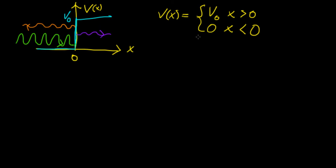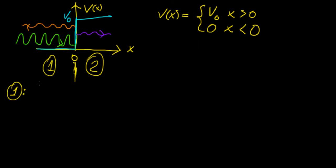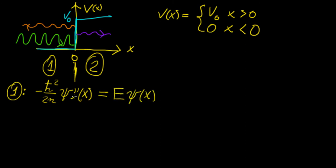To formulate any quantum mechanics problem, we start by writing the Schrödinger equation. We're going to have two regions: region 1 and region 2. Unlike most problems we've dealt with in the past, we're going to have a different solution to the Schrödinger equation depending on which region we're in. For the first region, the Schrödinger equation is going to look like this — we have our term ℏ² over 2m times the second derivative of the wave function. In this region the potential is 0, so I'll use a subscript 1 to differentiate it from the solution in the second region.